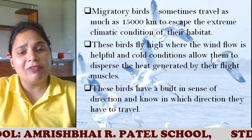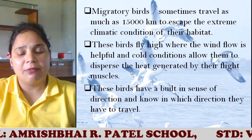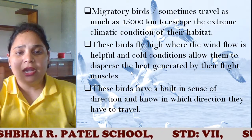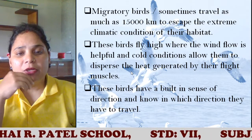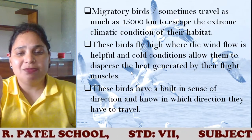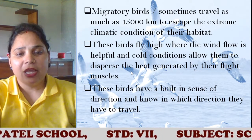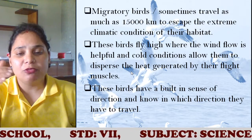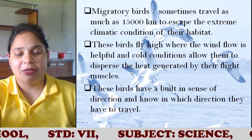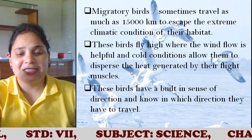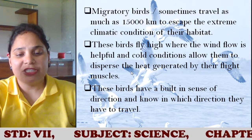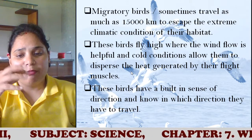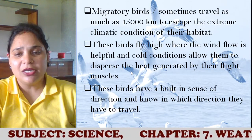You must be thinking these birds do not have any map, so how can they fly when the sky looks the same from all directions? These birds fly high where the wind is flowing, which is helpful for them, and the colder conditions allow them to disperse the heat generated by their flight muscles. These birds have a built-in sense of direction and know which way to travel, and with the help of wind they are able to cover the distance.